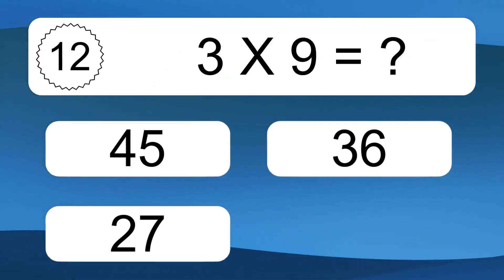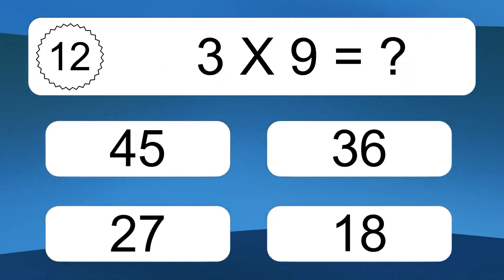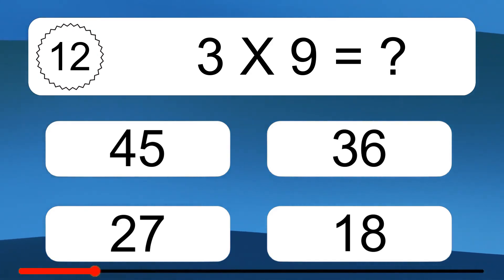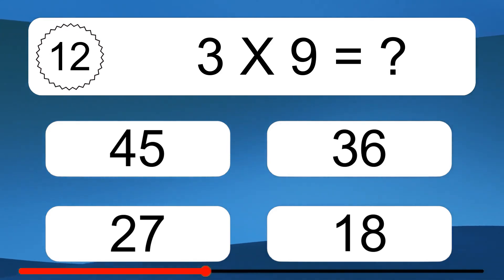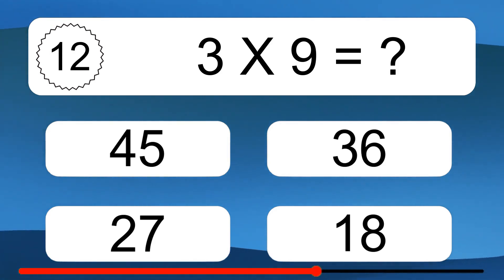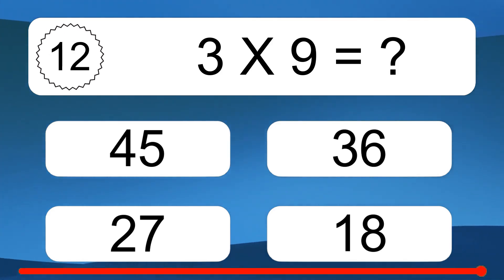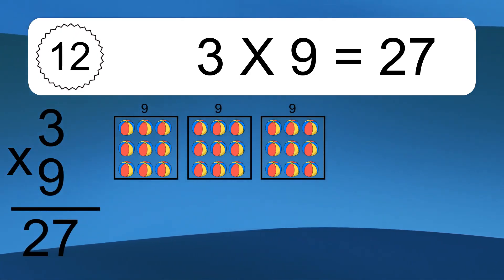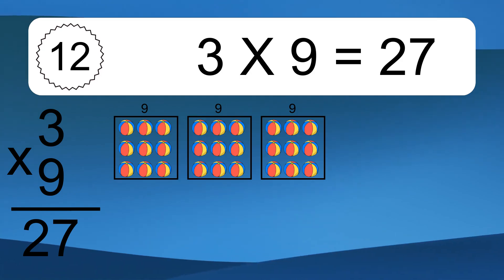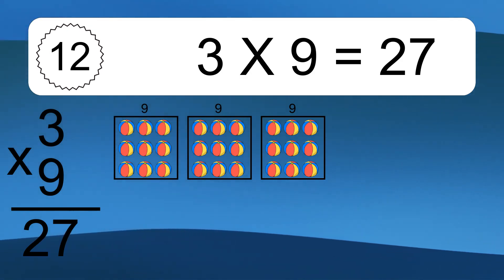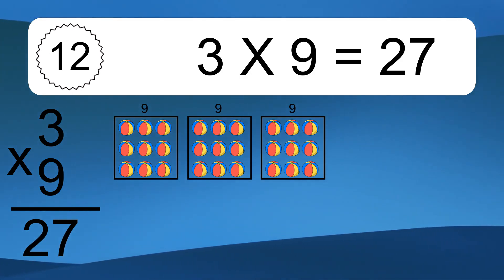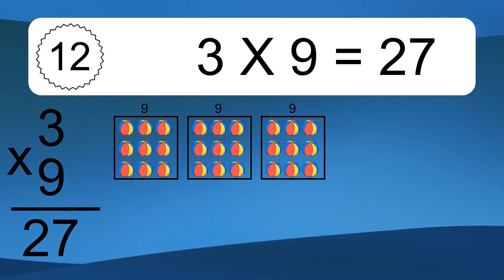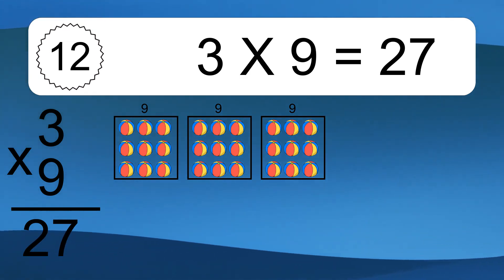3 times 9 equals what? 3 times 9 equals 27. We have 3 boxes, and each box has 9 colorful balls inside. If you count all the balls in all the boxes together, you will have 3 times 9 balls. This equals 27 balls.